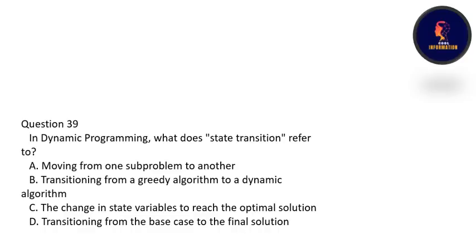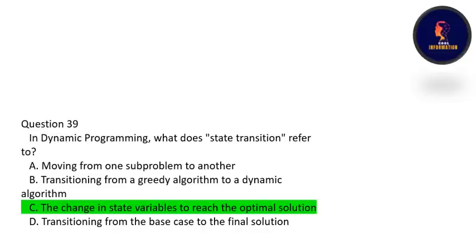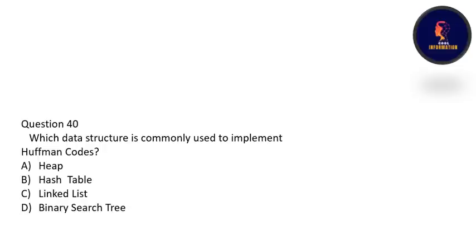In dynamic programming, what does state transition refer to? Option C is correct — a state transition means the change in state variable to reach the optimal solution. Which data structure is commonly used to implement Huffman codes? A heap data structure is commonly used — option A is correct.